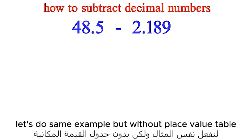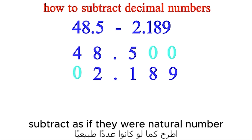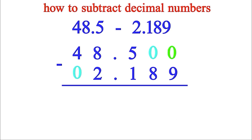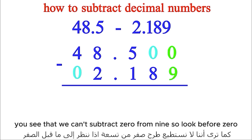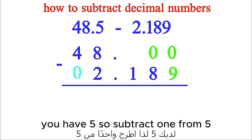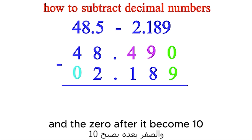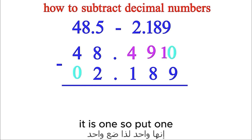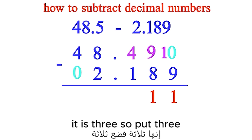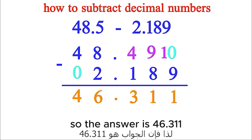Let's do the same example without a place value table: 48.5 minus 2.189. Write the two numbers vertically by aligning the dots. Put zeros when you don't have digits. Subtract as if they were natural numbers, starting from right to left, applying the same borrowing steps. The answer is again 46.311.